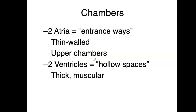Let's go to the chambers. There are two atria and two ventricles, so we have four chambers in the human heart. The atria we think of as the entryways — thin-walled upper chambers. The ventricles — the term means hollow spaces — are thick and muscular, and they actually eject the blood out to circulate it through the body. So: atria are entryways, and ventricles are the ejection pumps.